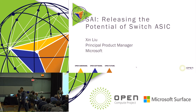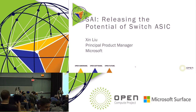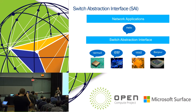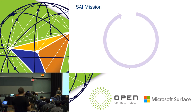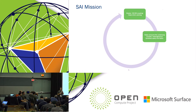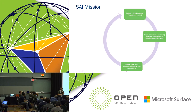Thank you. Good morning, everyone. Thanks for coming to this session. Today's topic will be SAI — releasing the potential of switch ASIC. I'm Shin from Microsoft, presenting the SAI community. In simple words, what is SAI? It is an interface that enables switch ASICs to talk using a common language to network applications. It enables you to decouple hardware and software, cherry-pick the best solution for your scenario, consume heterogeneous hardware easily and fast, and focus on building consistent and stable SDN applications. It's a big step forward for open networking.